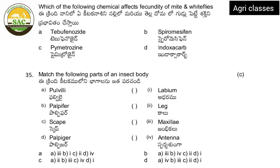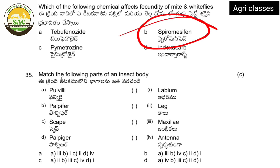Next: which of the following chemical affects fecundity of mites and whiteflies? Fecundity is the ability to produce eggs — these chemicals reduce reproduction capacity. Options include Tebufenazide, Spiromesifen, Pymetrozine, and Indoxacarb. This is an important objective covering chemical pesticides, botanicals, and rodenticides.